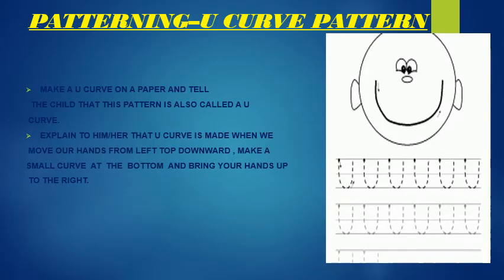So children, did you like the Clever Cat rhyme? You liked? Okay. Now we are going to make the U-curve pattern. Children, can you see this picture of the smiling baby? Can you see the smile on the baby's face? Yes, this pattern is called the U-curve pattern. What is this pattern called? It is called the U-curve pattern.